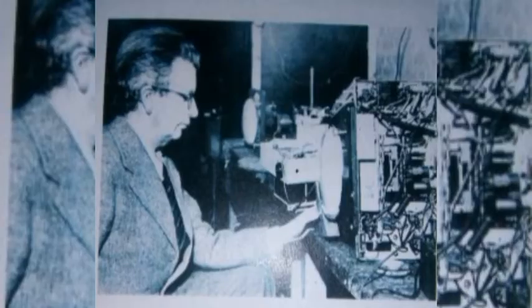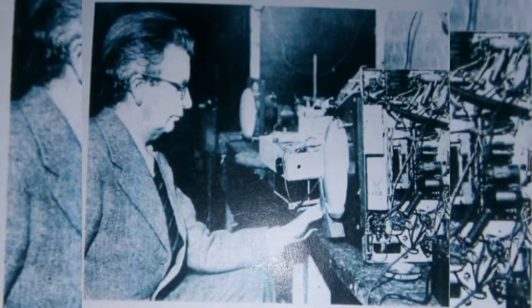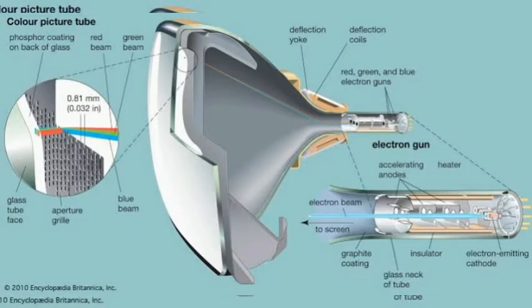One of the pioneers of television was John Logie Baird. In 1926, Baird demonstrated a system called the Baird Televisor. It used a rotating disc — a spiral of lenses called a Nipkow disc — to divide an image into horizontal lines. Scottish electrical engineer and inventor John Logie Baird, from 1888 to 1946, was the first person to transmit a television picture by radio waves.